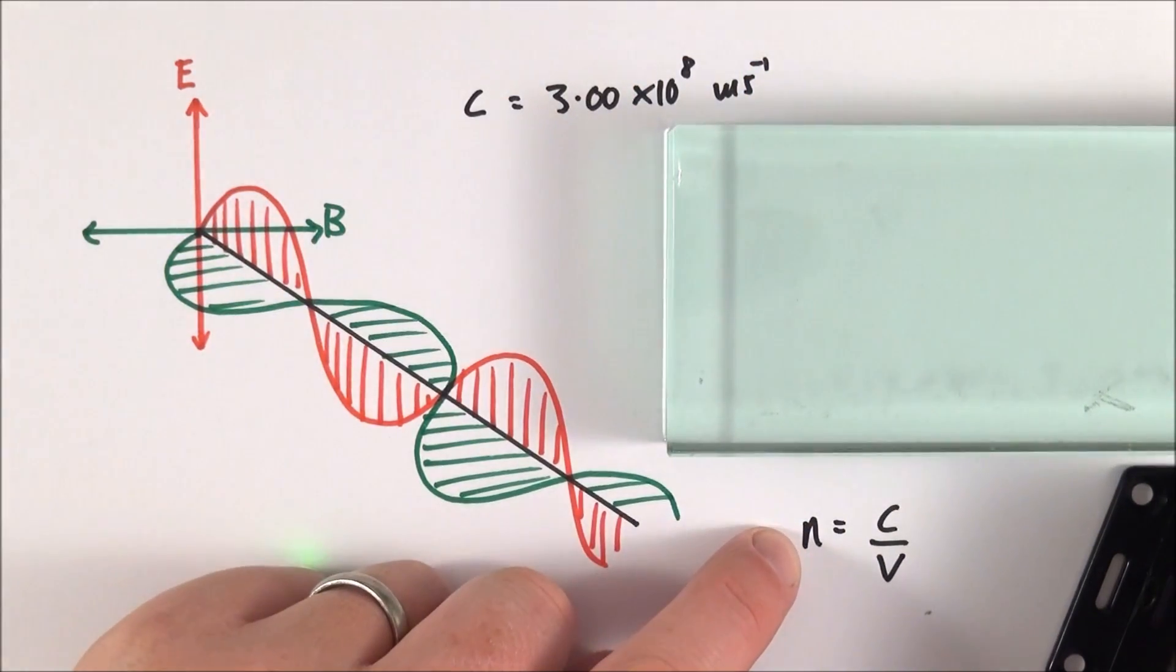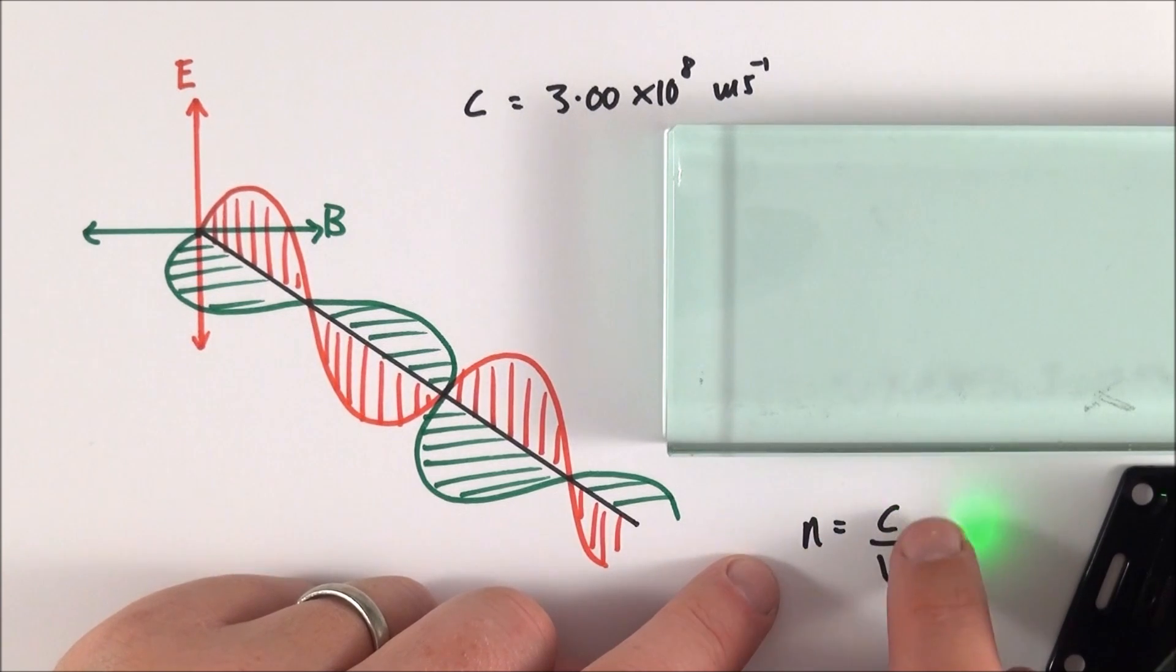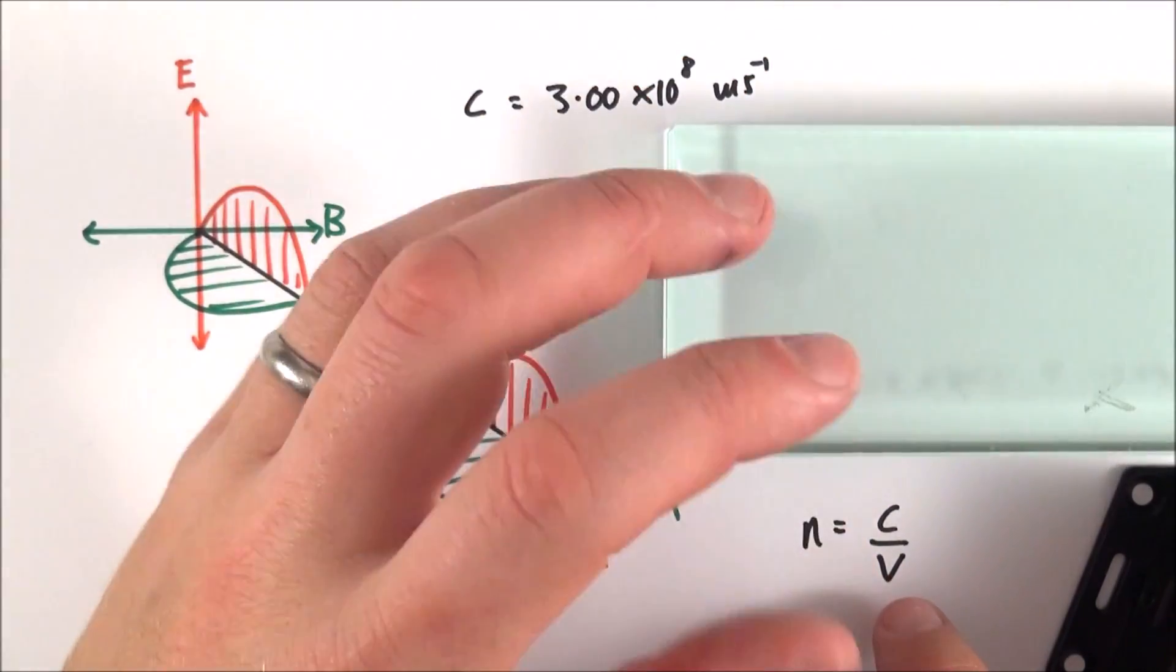So the refractive index n is equal to the ratio of that speed of light in a vacuum to the speed of light in this medium. And what this basically tells you is how much that light slows down.